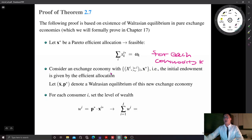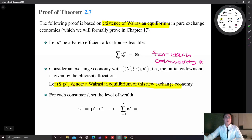So now we consider a new exchange economy with a new initial endowment, where the initial endowment is now given by the efficient allocation. Let X bar and P star denote the Walrasian equilibrium of this new economy. Here I use the fact of existence of Walrasian equilibrium — you may wonder whether equilibrium exists in this new economy, but it does exist. So X bar is an equilibrium allocation in this new economy, and P star is the equilibrium price vector. These two components always exist — let's take this as a fact.